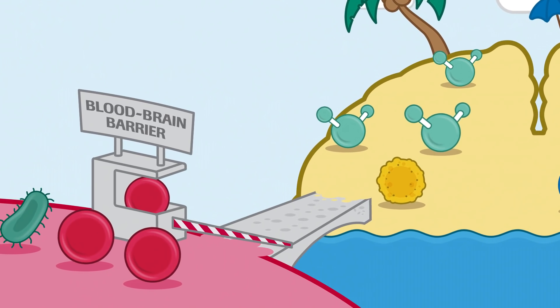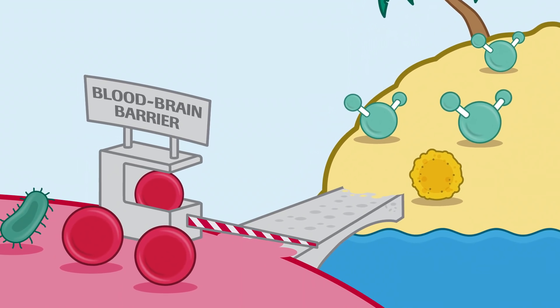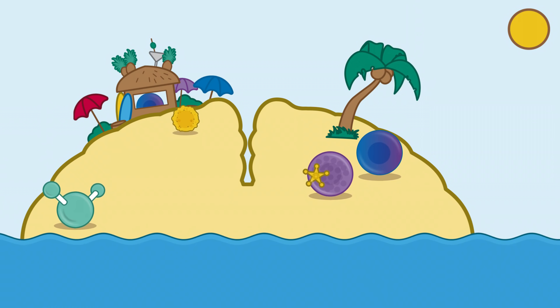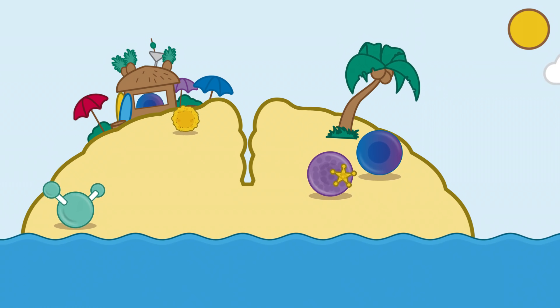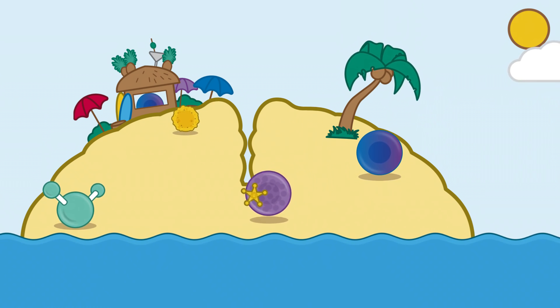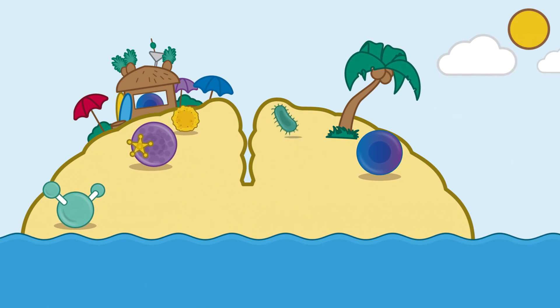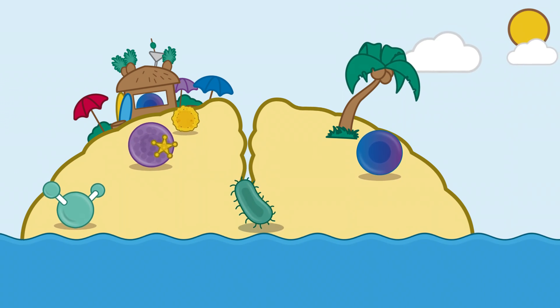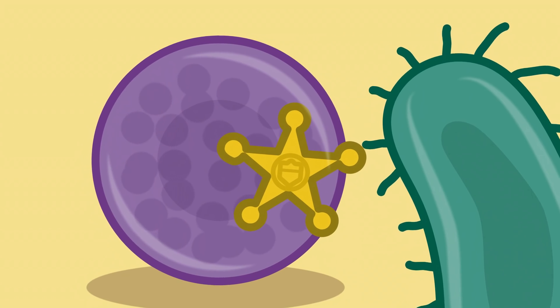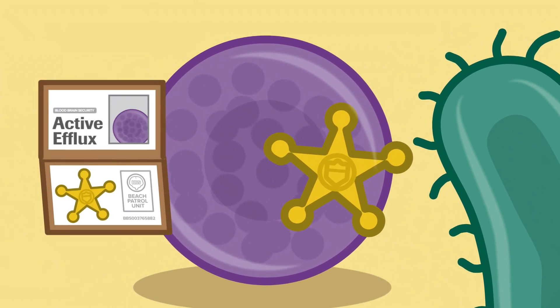The ticket booth is the first barrier, the blood-brain barrier. But just because people are allowed to get to the island doesn't mean they can stay on the island forever. Security patrol the island to remove people after their ticket has expired. This security patrol is the second barrier, the active efflux.